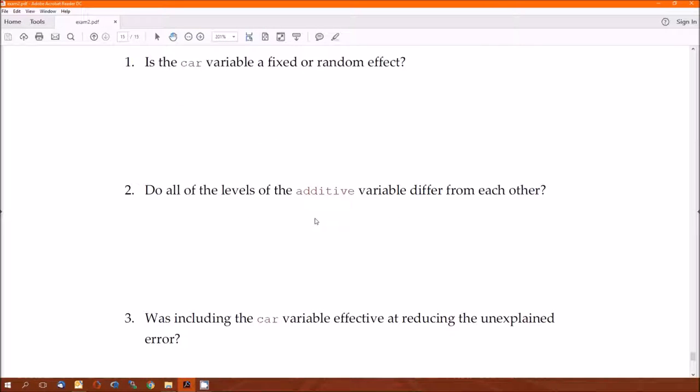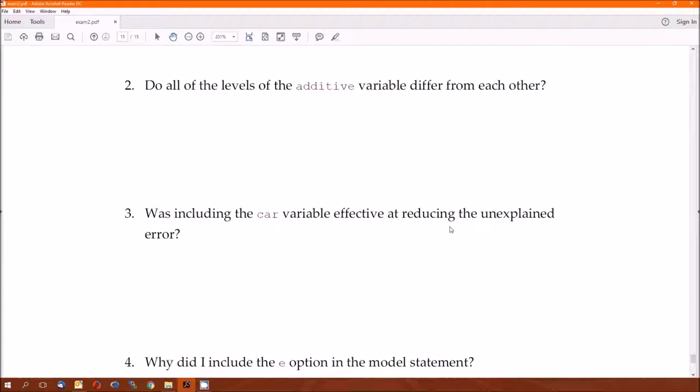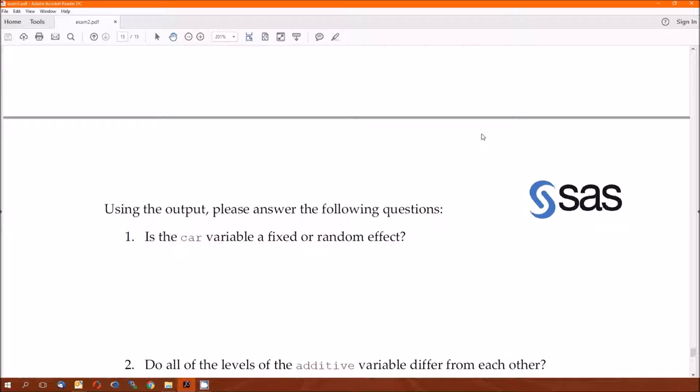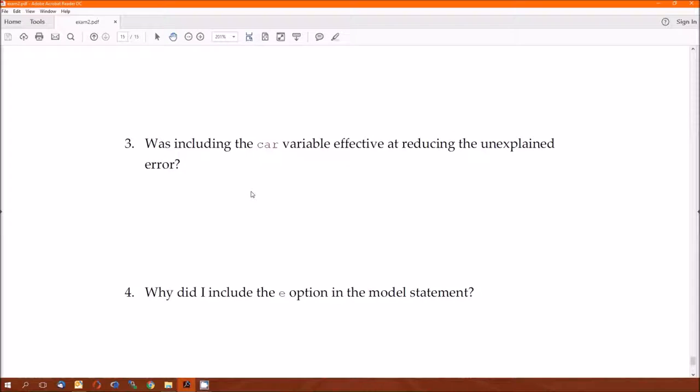Two: do all of the levels of additive differ from each other? Let's look. So one versus three differs. Two versus three differs. One versus two, we did not detect a difference. So do all the levels? We do not know. Notice I didn't ask do all the levels significantly differ. I just asked if they differ. And the answer is we don't know from this output. We do know that one and three differ and two and three differ, but we don't know if one and two differ.